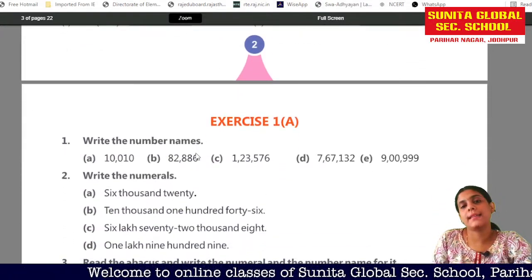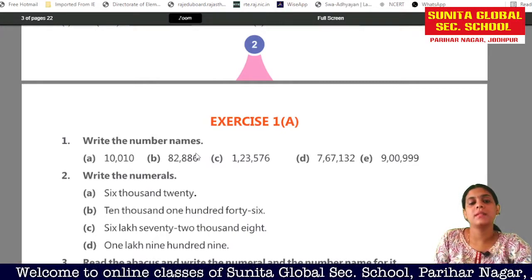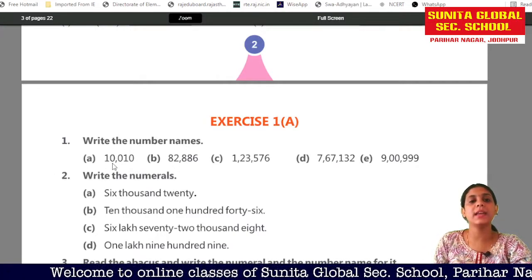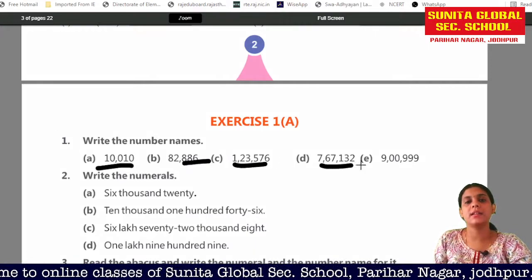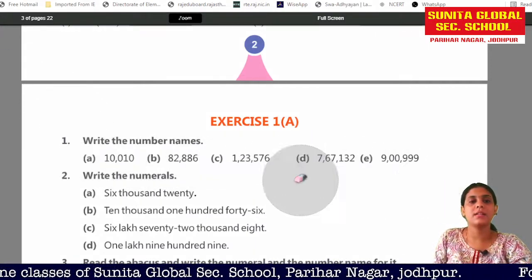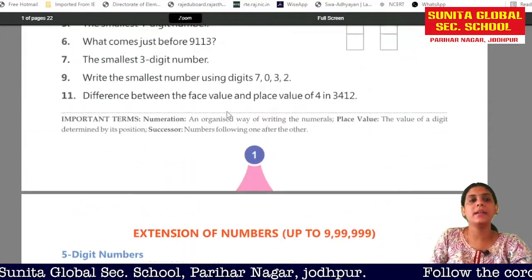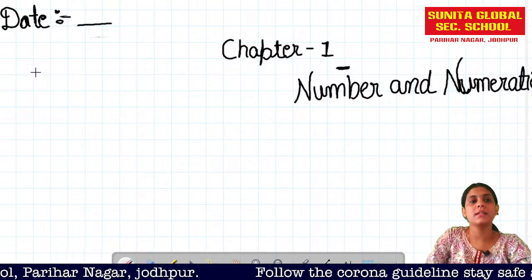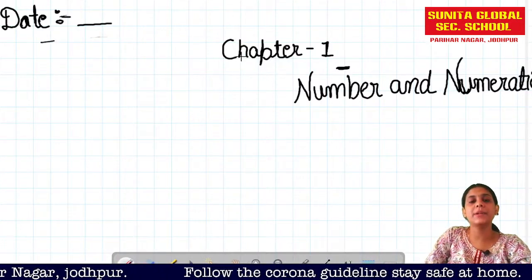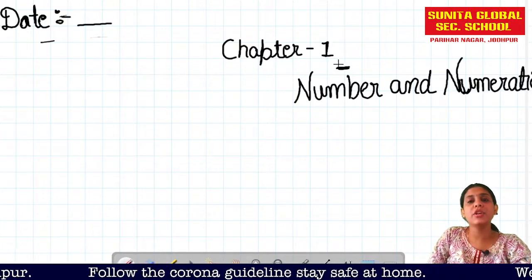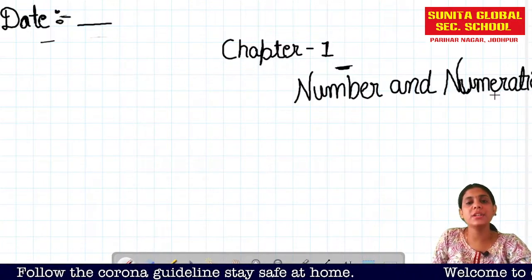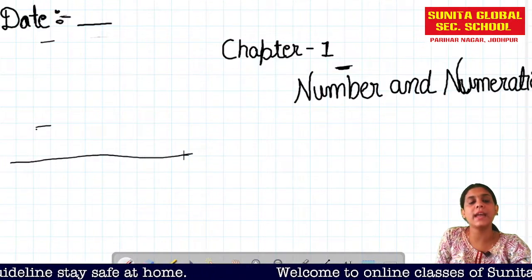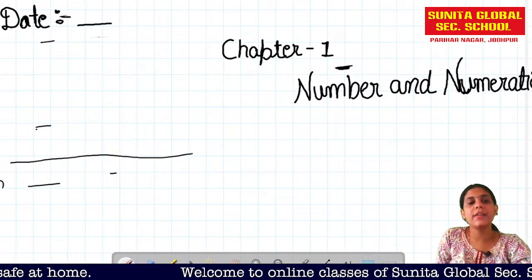Now we have to do Exercise Number 1. In the first question, you have to write your number names. Add the date, then Chapter 1: Numbers and Numerations. Chapter 1 shall be marked, then write Numbers and Numerations. Then number one will follow, and the first question will be written in the book.